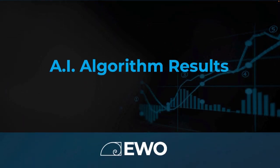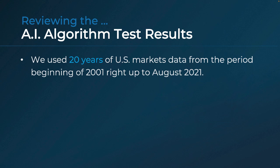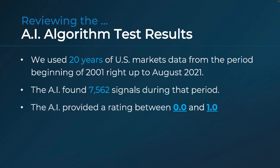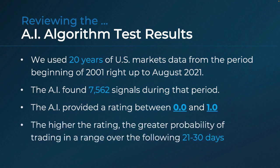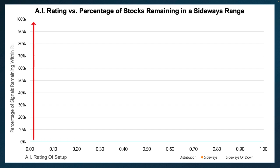So let's talk about the results. We gave the AI 20 years worth of stock data from 2001 to 2021. The AI was able to identify 7,562 candidates for trade opportunities in this period and rate them on a scale of 0 to 1 — think of that as 0 to 100%, with the high score indicating a higher probability that the stock would trade sideways over the next 21 to 30 days. We then took the AI recommendations and did an analysis on how accurate this was, with results shown on the scatterplot.